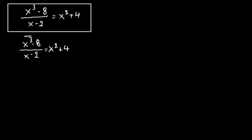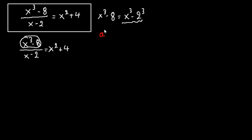Let's concentrate on the numerator here. We have x to the third minus 8, which can be written as x to the third minus 2 to the third. This form reminds us of a known identity: a to the third minus b to the third equals a minus b, times a squared plus ab plus b squared.